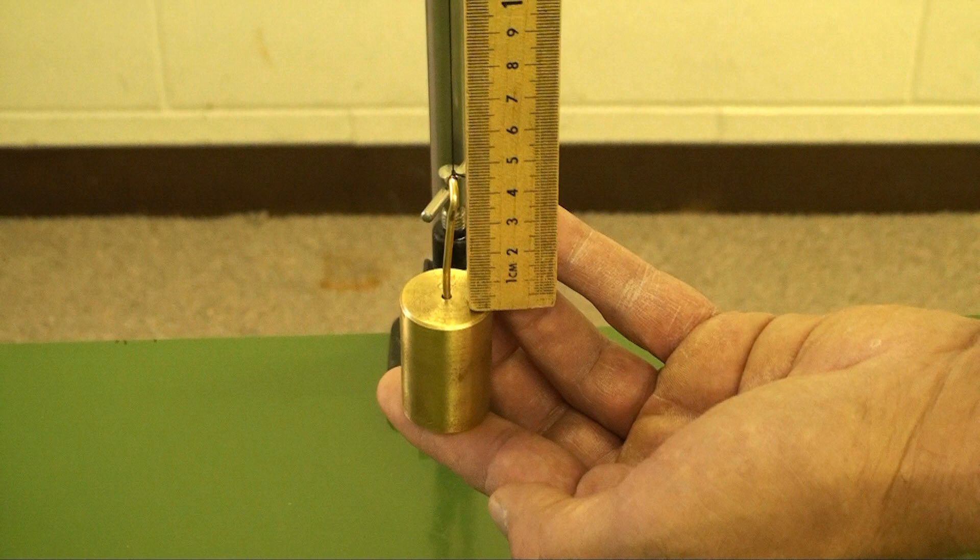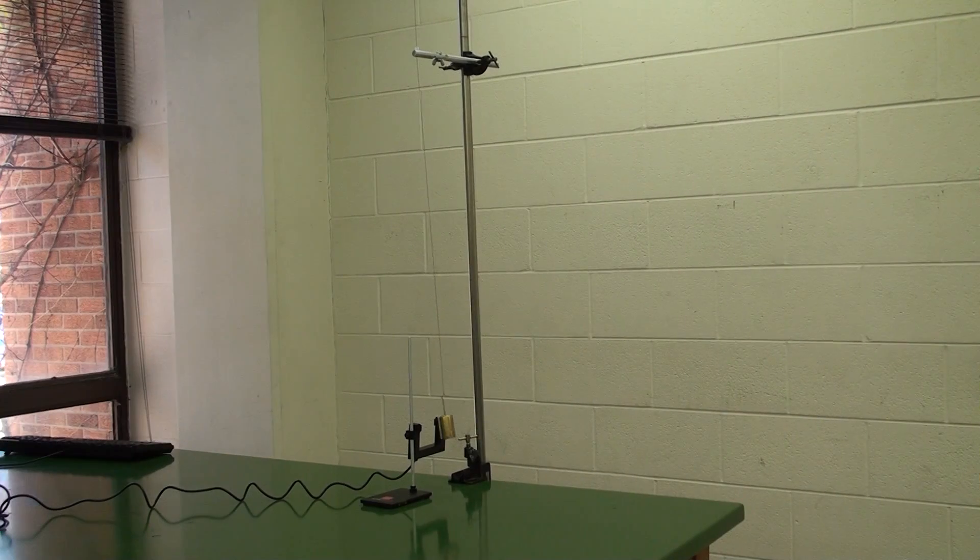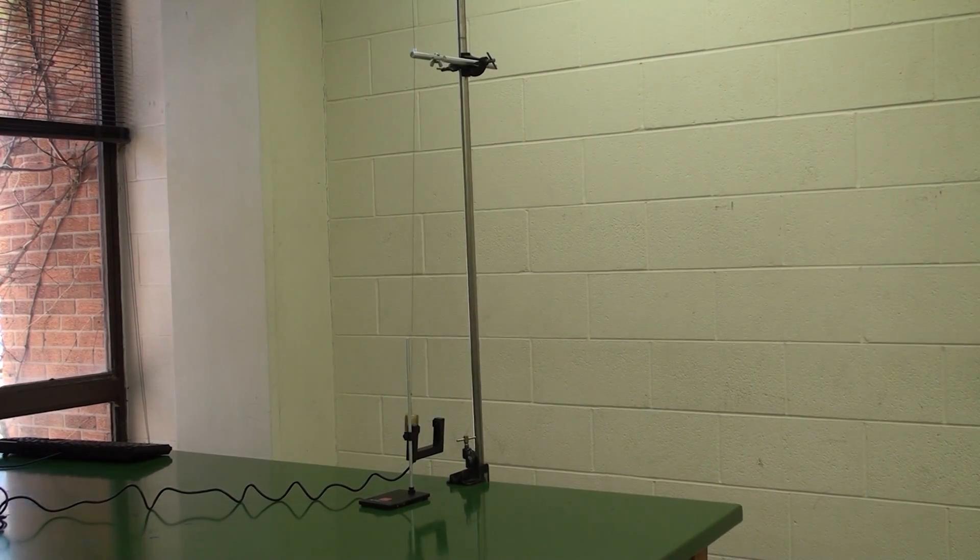The pendulum length extends from the glass rod downward to the center of mass of the hanging weight. If you like, you can once and for all measure the approximately two centimeter distance of the center of mass, and just add that consistently to the length of the top of the weight.